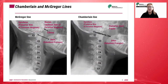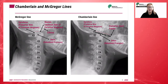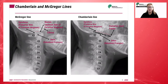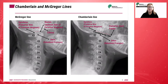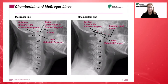The Chamberlain line is drawn from the posterior of the hard palate to the median point of the posterior margin of the foramen magnum. It helps to recognize basilar invagination, which is a cranial cervical junction abnormality where the tips of the dens are raised.